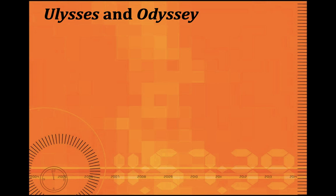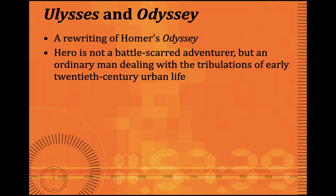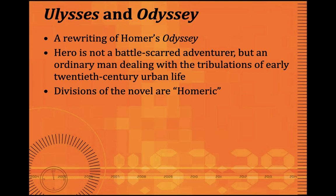There is a strong parallel between Joyce's Ulysses and Homer's Odyssey. It is like a rewriting of Homer's Odyssey, but in a very oblique and ironic way. The hero here is not a battle-scarred adventurer but an ordinary man dealing with the tribulations of early 20th-century urban life. Leopold Bloom is Ulysses or Odysseus, Stephen Daedalus is his son Telemachus, and Molly Bloom parallels Penelope. While Penelope maintained her chastity faithful to her husband's memory, Molly Bloom is freely having an extramarital relationship with her manager.